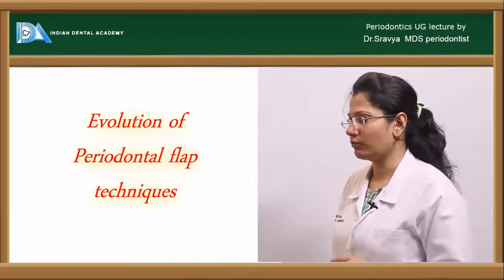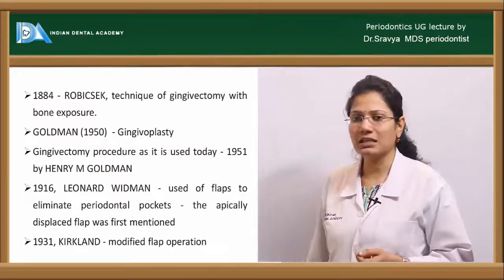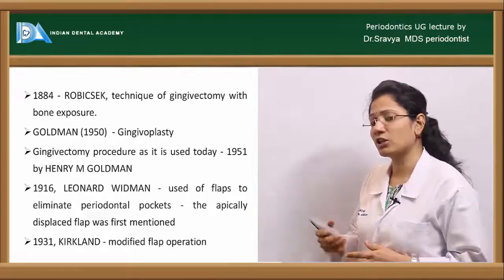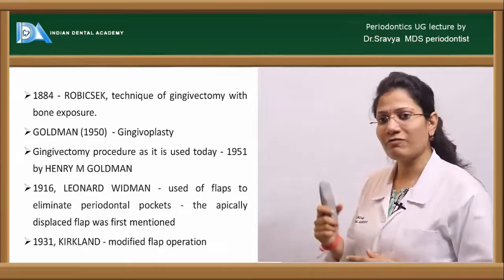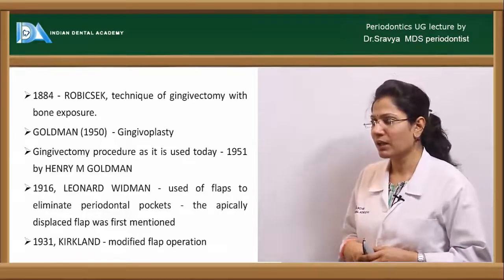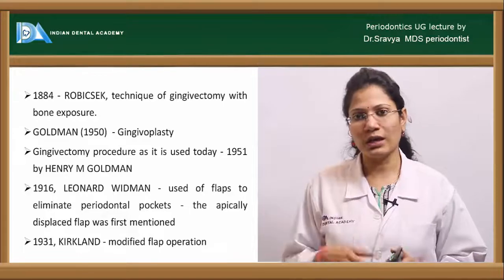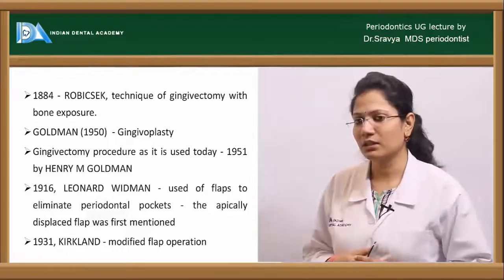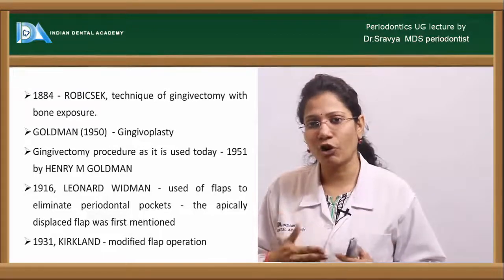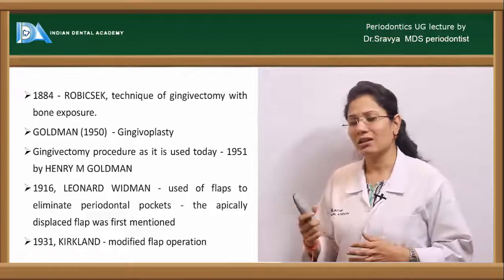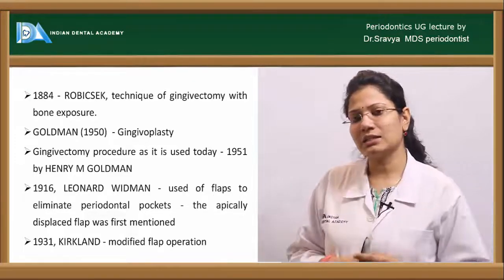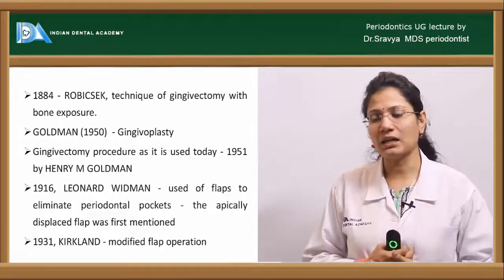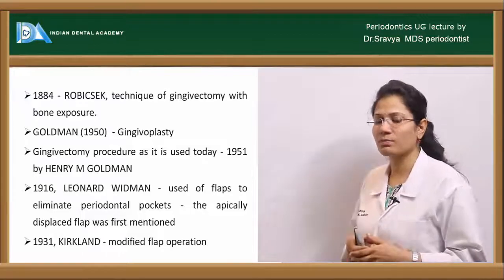What is the evolution of periodontal flap techniques? In 1884 it was Robesik who was the first one to give the technique of gingivectomy without bone exposure. Flap surgical techniques actually started from here. Then Goldman in 1950 gave the duoplasty technique, and the gingivectomy technique we follow at present was given by Goldman in about 1951. In 1916, Leonard Widman used flaps to eliminate periodontal pockets, especially the apically positioned flap.